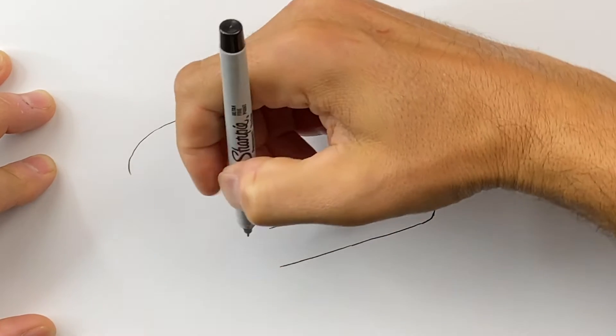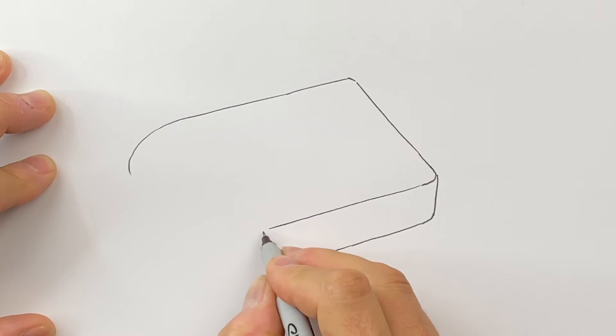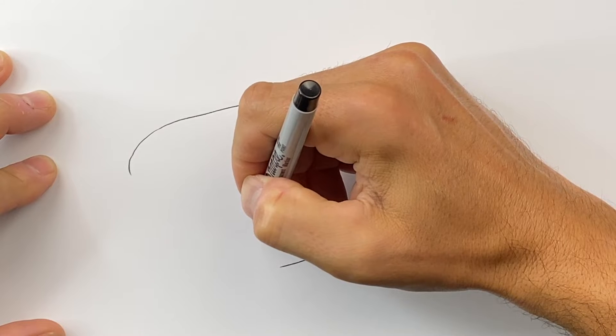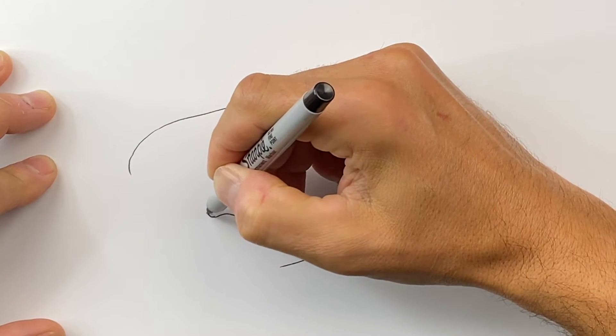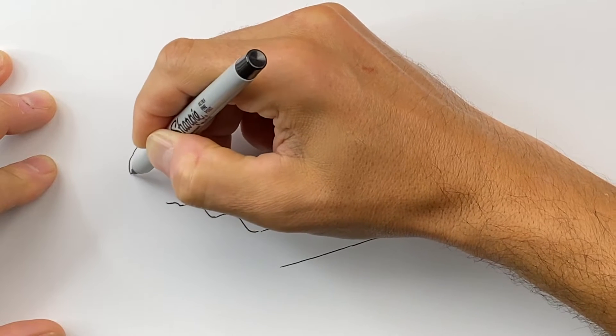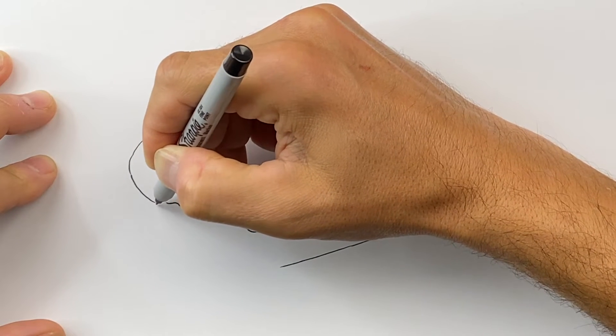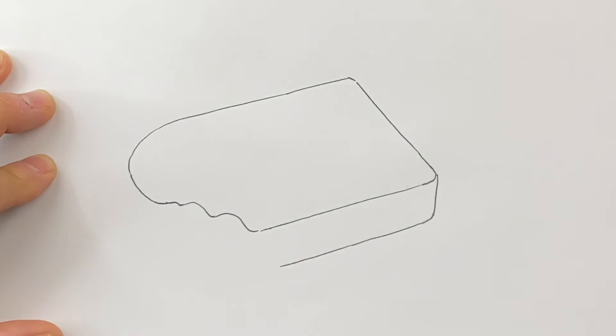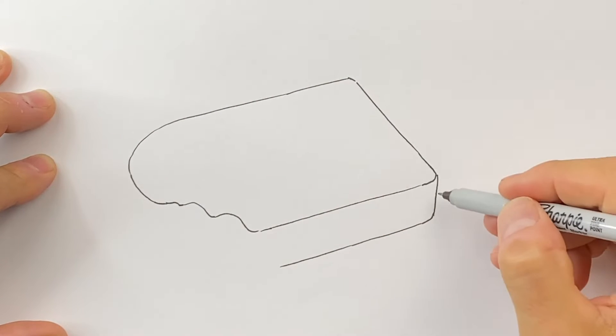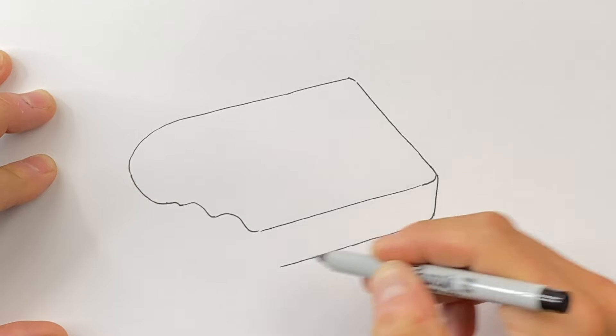Now what we'll do is we're going to have a bite taken out of this. So we're gonna kind of go like this and just do these two big chunks, and then this will round and meet up.